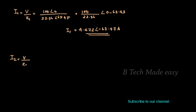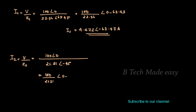For branch current I2, we compute V divided by Z2. Z2 in polar form is 21.21 angle minus 45 degrees. So I2 equals 100 divided by 21.21 angle minus 45 degrees, which equals 4.72 angle 45 degrees. That completes the solution for both branch currents.